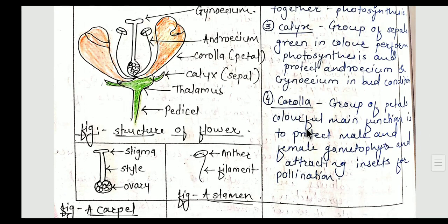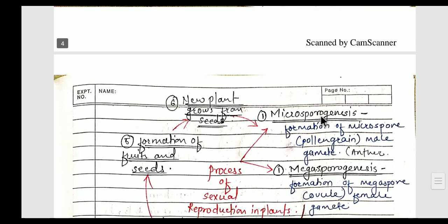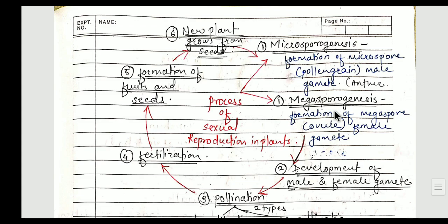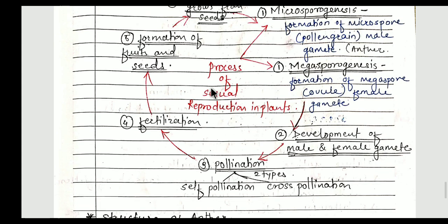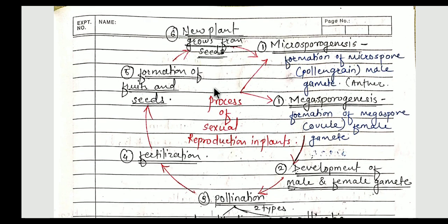So the structure of flower has two parts — the essential whorl and the accessory whorl. The essential whorl has two parts: androecium and gynoecium. The accessory whorl has four parts: pedicel, thalamus, calyx, and corolla. Now I will explain the process of sexual reproduction in plants with the help of a pie chart. The first process is microsporogenesis and megasporogenesis. Microspore is a male gamete, so the formation of the male gamete is microsporogenesis; megaspore is a female gamete, so the formation of the female gamete is megasporogenesis.